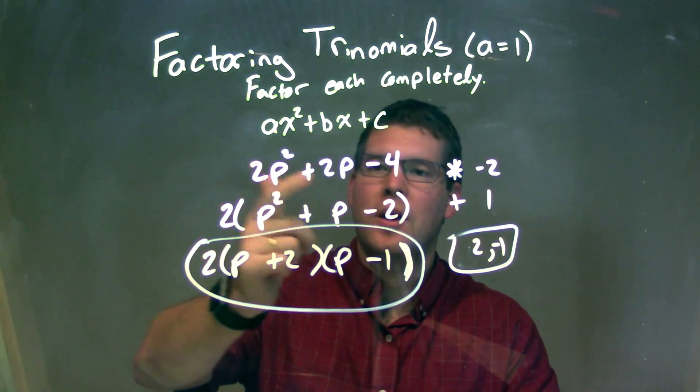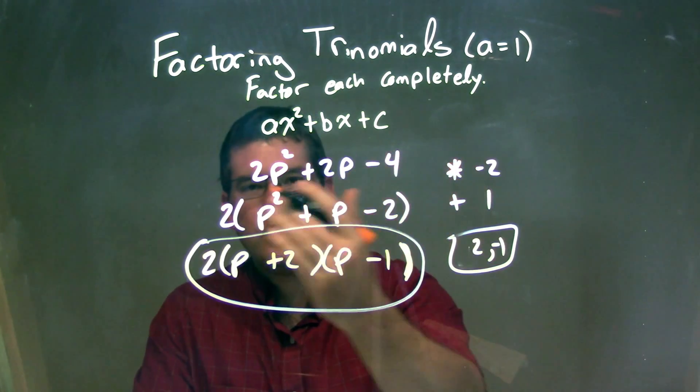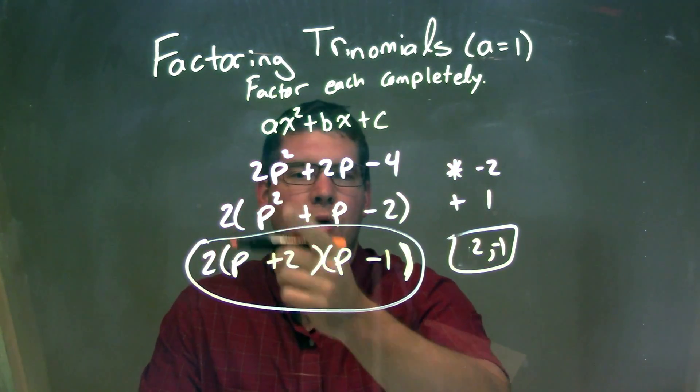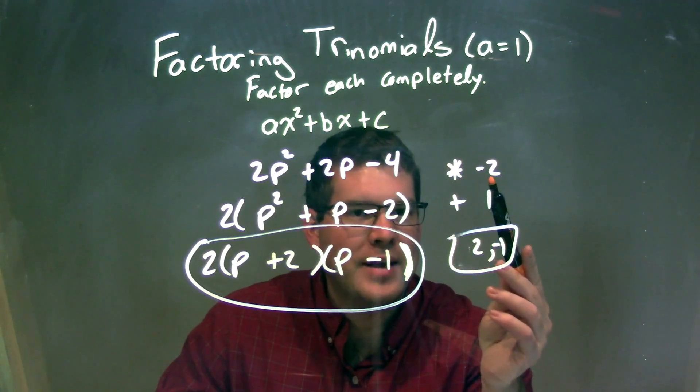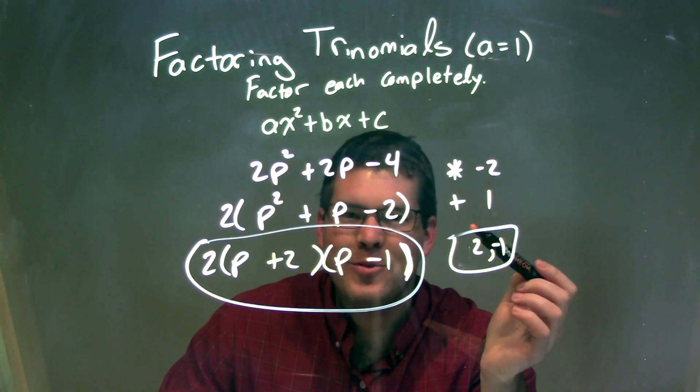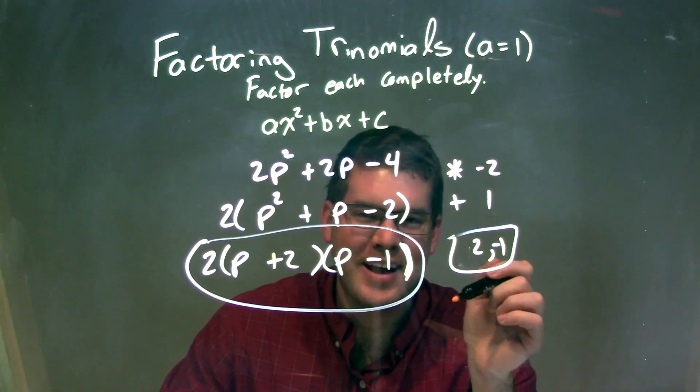So let's recap. We're given 2p squared plus 2p minus 4. We saw that 2 is in all parts, so we factored out the 2 to get 2 times p squared plus p minus 2. Then we asked: what two numbers multiply to negative 2 and add to 1? Those two numbers are positive 2 and negative 1.